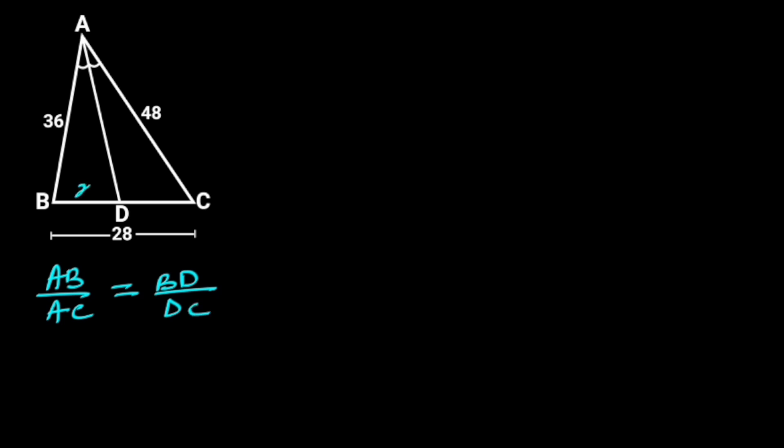Let BD be X and DC, Y. Since the length of BC is 28, and we have taken BD to be X and DC as Y, Y will be 28 minus X.